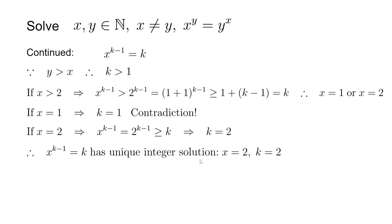We get a unique integer solution for this equation: x equals 2, k equals 2. Plug this back into the original equation when y equals kx. We get x equals 2, y equals 4 is a solution. If we plug this back into the original equation, 2 to the degree of 4 equals 16, and 4 to the degree of 2, which is 4 squared, equals 16. So this is the right solution.